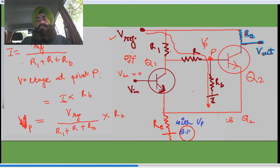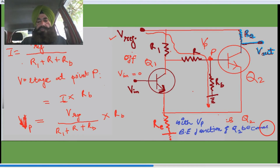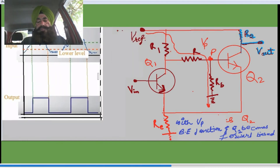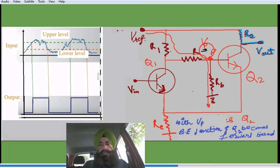When the base-emitter junction of Q2 becomes forward biased, the transistor will be in the on state. All currents — Ia, Ib, and Ic — will start flowing. When Ic flows, the output will reach the low value. When collector current flows, output comes to the low potential. Because of Vp, it is at low potential.